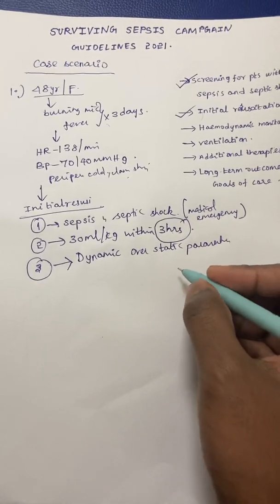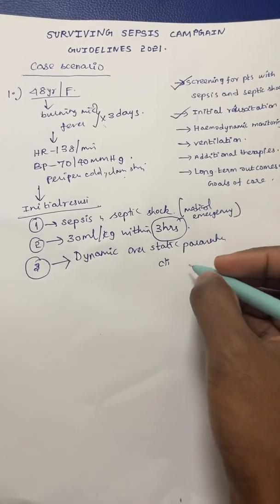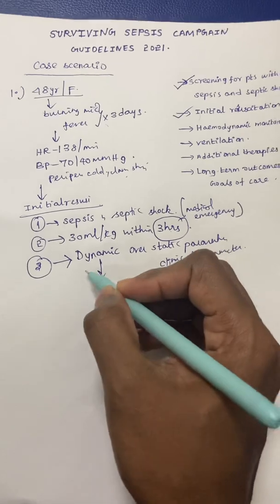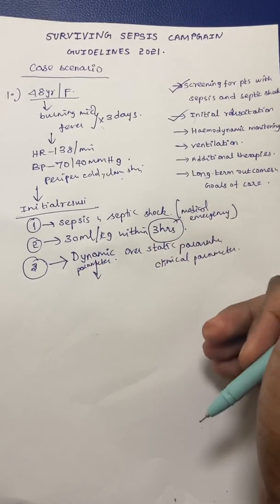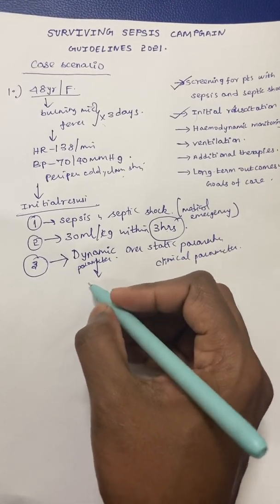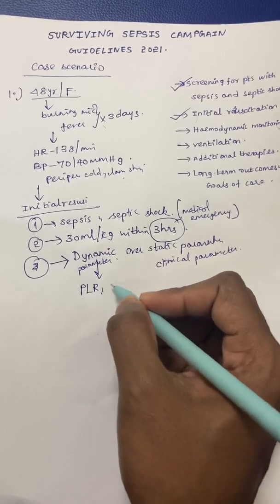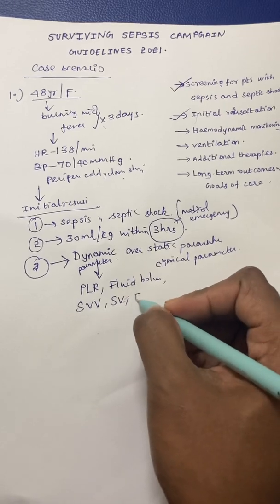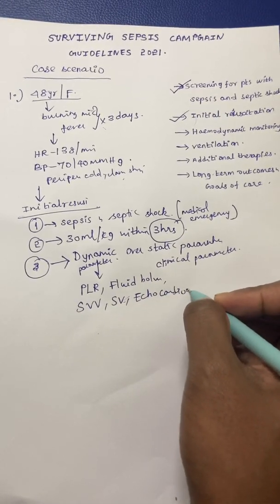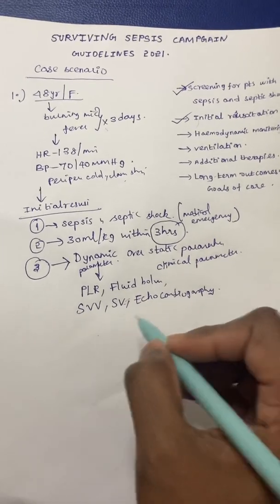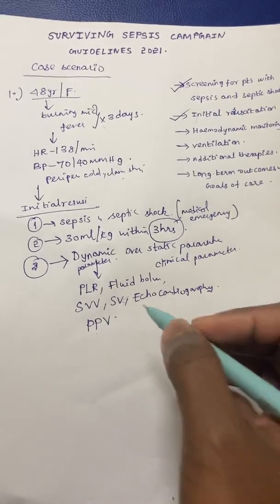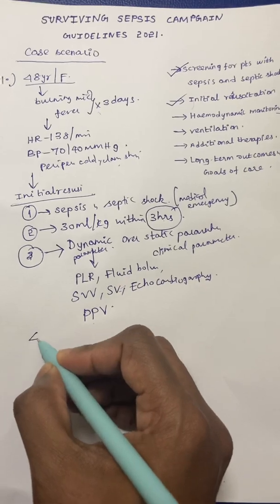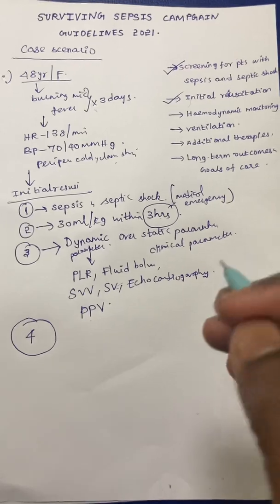Of course, you will assess clinical examination — whether there is a decrease in heart rate, improvement in BP, and improvement in mental status. However, compared to clinical and static parameters, dynamic parameters give a better picture of how fluid resuscitation is going. These include passive leg raising (PLR), fluid bolus trials, stroke volume variation, echocardiography for cardiac output assessment, and if the patient is intubated with an arterial line, pulse pressure variability (PPV) can also be assessed.